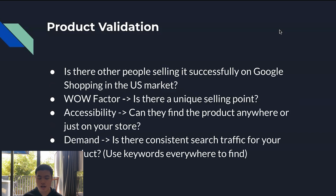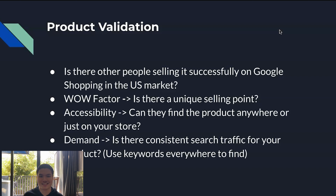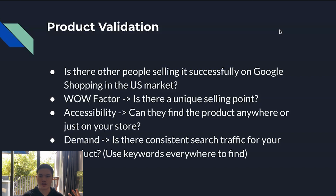Moving on to product validation. The first thing I always ask myself is: is anyone already selling this product successfully? If the answer is yes, that's a really good sign. After spending tens of thousands of dollars testing on Google, I found that if a product is working for another dropshipper, most of the time you can also get it to work. Unlike Facebook Ads where replicating others' results can be harder, on Google Ads if someone is already running a product successfully, there's a good chance you can make it work too.